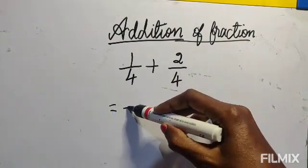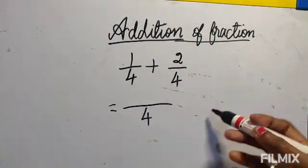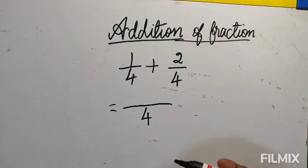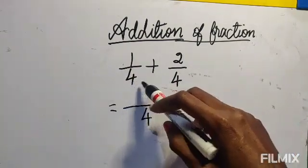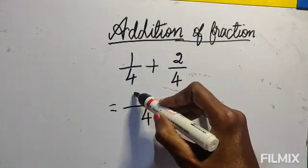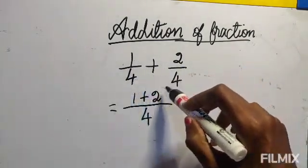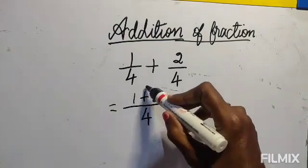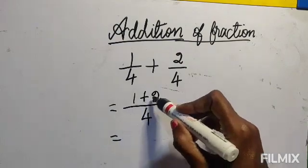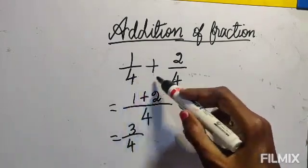First, take the common denominator and write it down — don't skip this step or you will make a mistake. Write it like this: first write the common denominator. Here both are having 4, so write 4 down. Then write the numerators on the top. Now add only the numerators: 1 plus 2 equals 3, so the answer is 3 by 4. The denominator remains the same.